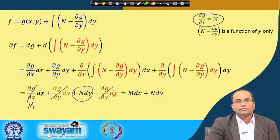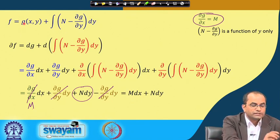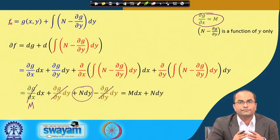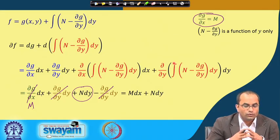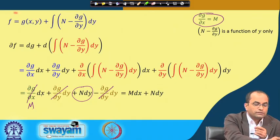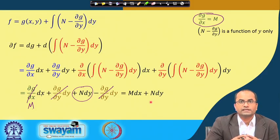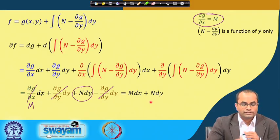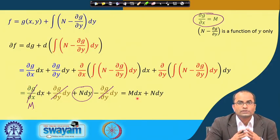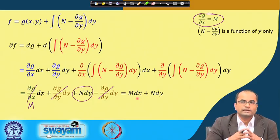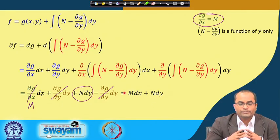So there exists an f — once we assume the condition ∂M/∂y = ∂N/∂x — whose differential is exactly M dx + N dy. We have now shown the necessary and sufficient condition for M dx + N dy to be exact: ∂M/∂y must equal ∂N/∂x. Once we know the equation is exact, we must construct f whose differential is M dx + N dy.